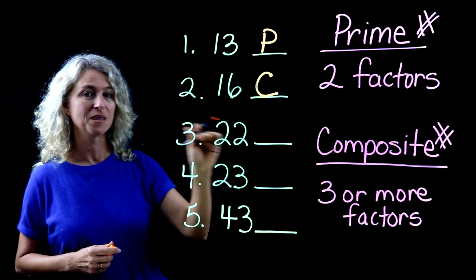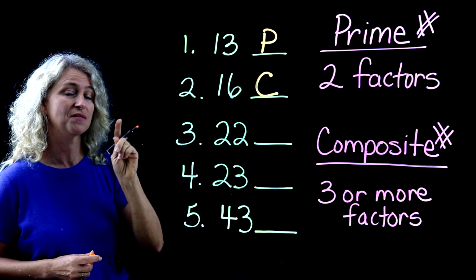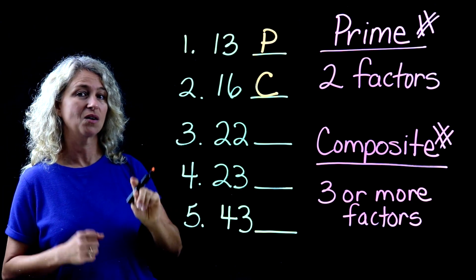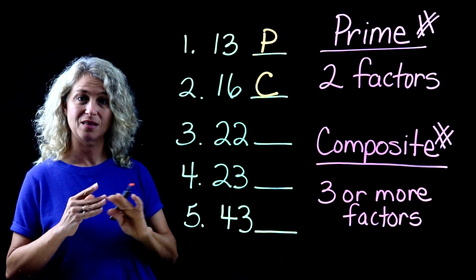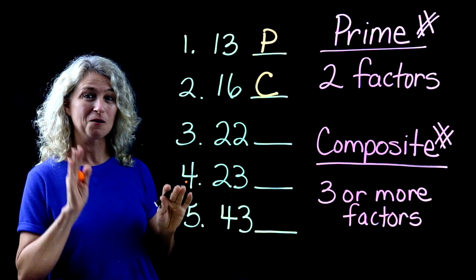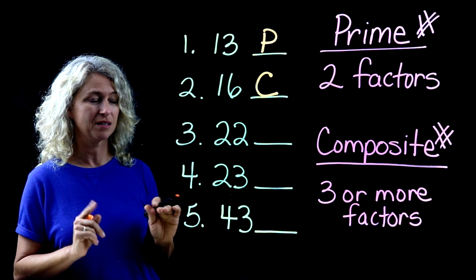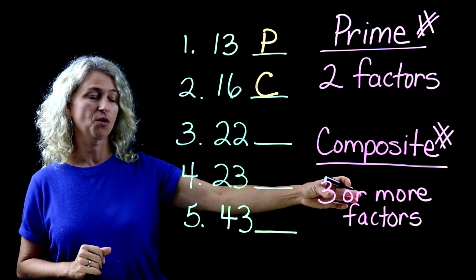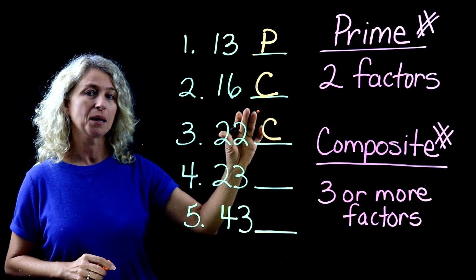22. This is a tricky one, and this is one that I've seen students make the mistake on. They think 1 times 22, and they think that's it. But don't forget, 2 times 11. So that's 3 or more factors. That is composite.